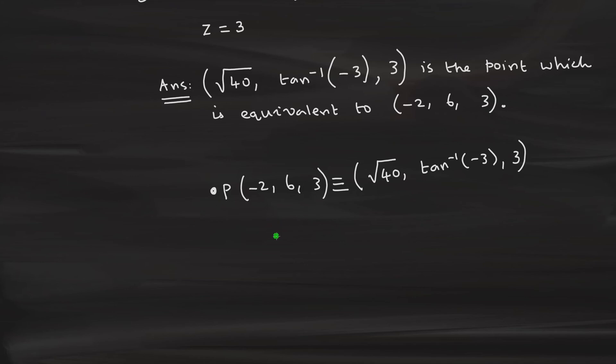This is what is known as components are getting transformed. Components will get transformed like this. Whereas, the point itself will be invariant. This point will not change. Therefore, that will be invariant. Now, we will go to the second part.